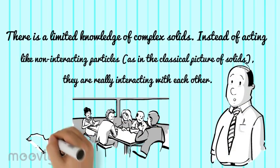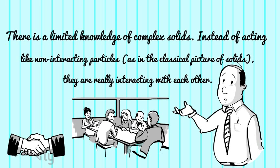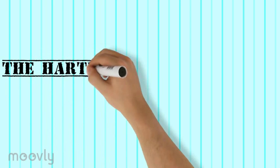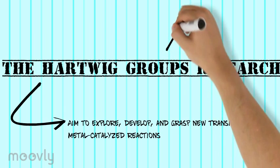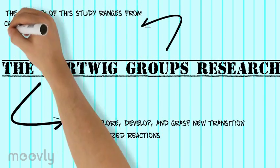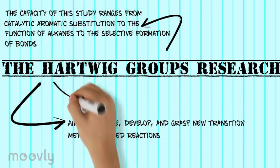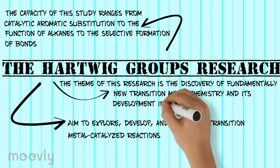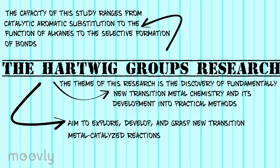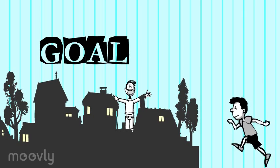There is limited knowledge of complex solids. Instead of acting like non-interacting particles, as in the classic picture of solids, they are really interacting with each other. The Hartwick group also has a study going on where they aim to explore, develop, and grasp new transition metal catalyzed reactions. The capacity of this study ranges from catalytic aromatic substitution to the functionalization of alkanes to the selective formation of bonds. The theme of this research is the discovery of fundamentally new transition metal chemistry and its development into practical methods, reached by obtaining intuition from accurate mechanistic studies.